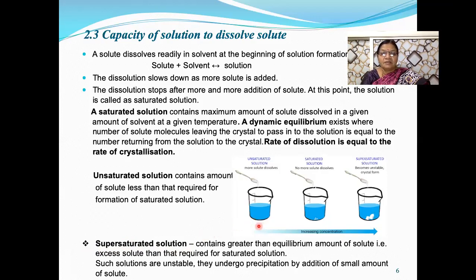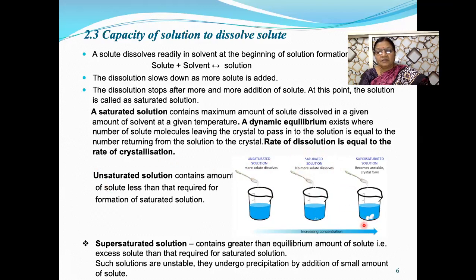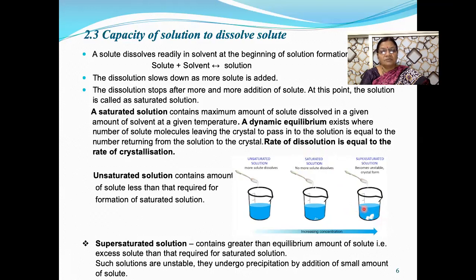This can be illustrated with the help of figures. In the first beaker, the solute gets completely dissolved — the solution is unsaturated. In the second beaker, no more solute dissolves and the added solute remains undissolved at the bottom; a dynamic equilibrium exists and the solution is saturated. The third type — supersaturated solution — contains a greater amount of solute than the equilibrium amount required for a saturated solution, i.e., it contains excess solute.